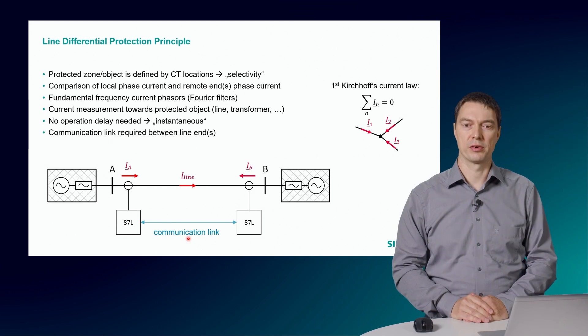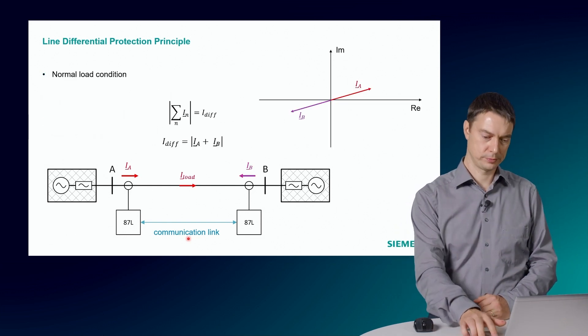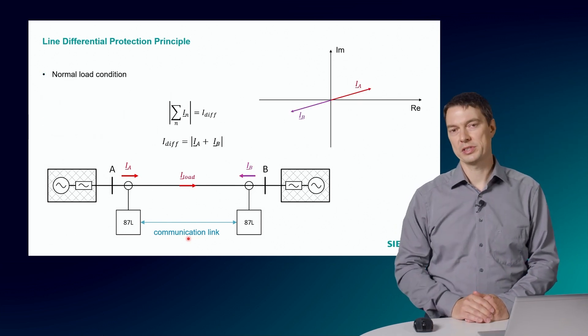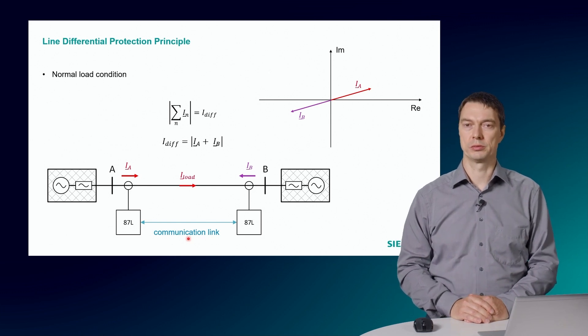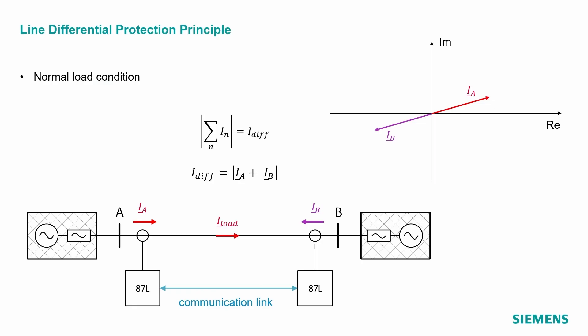Let's have a look what happens if we have a current flowing at the line. In the first example, we have the normal load condition, which is a load current flowing at the ideal line, shown here. And we look at the phasor diagram on the top right with the imaginary part and the real part of the phasors, which are measured by the protection relays. The current IA is measured by the relay in A and the current IB is a current measured in the relay B. This is of the opposite direction because the load flows through the line.